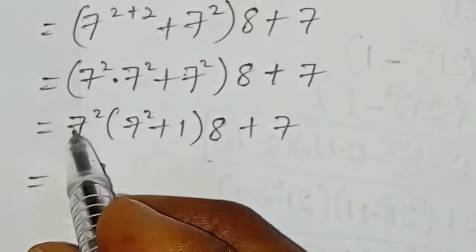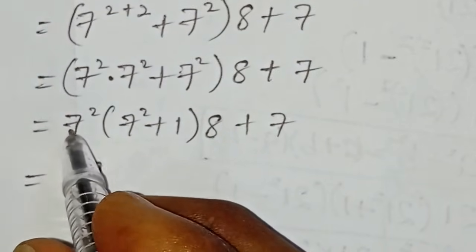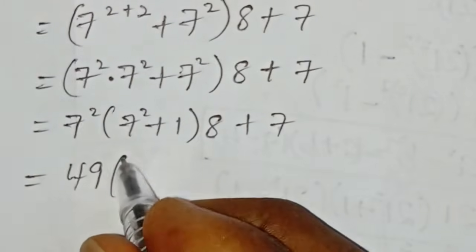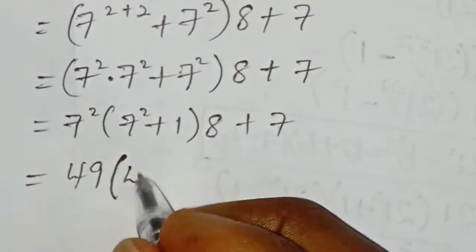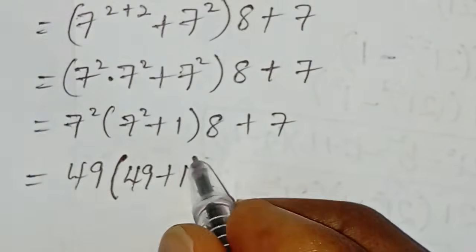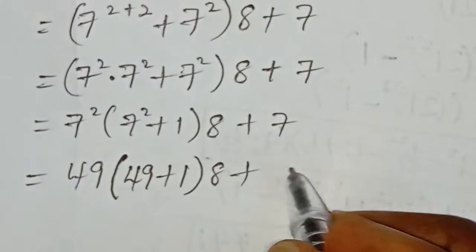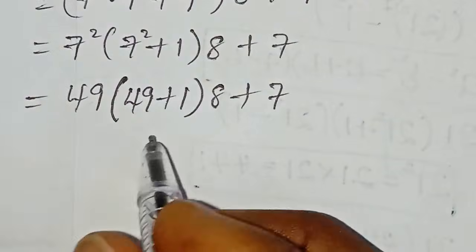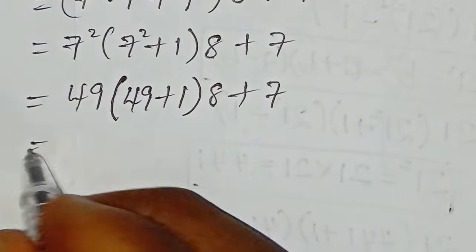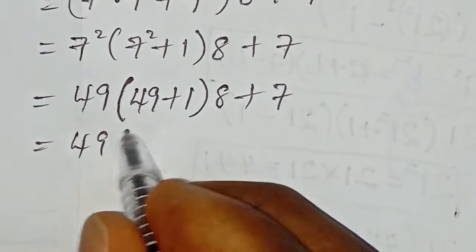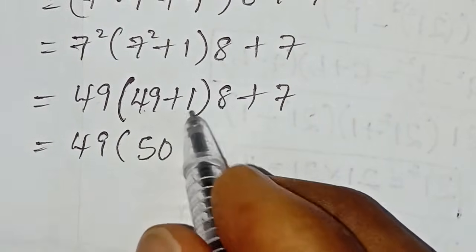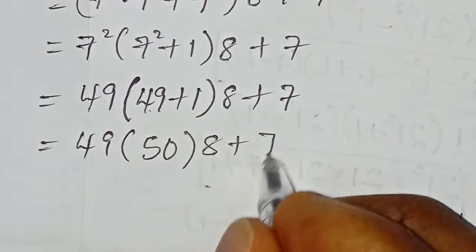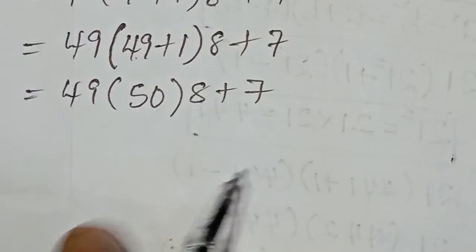Seven to the power of two equals 49. So we have 49 multiplied by the bracket 49 plus one, close bracket, multiplied by eight, plus seven. Since 49 plus one equals 50, this becomes 49 multiplied by 50, multiplied by eight, plus seven.